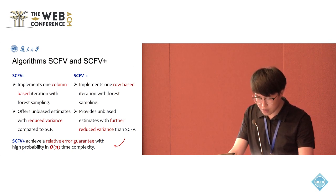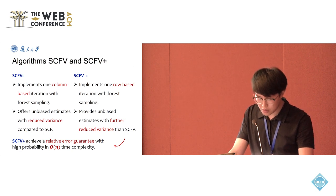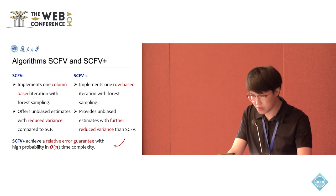The reason SCFV+ has lower variance compared to SCFV is that the row-based iteration avoids the complex cross-product term found in the variance formulation of SCF.